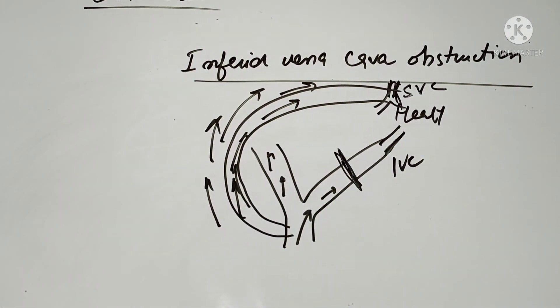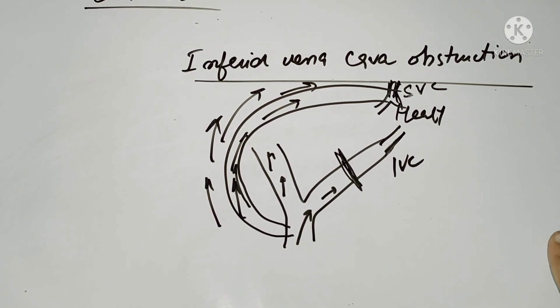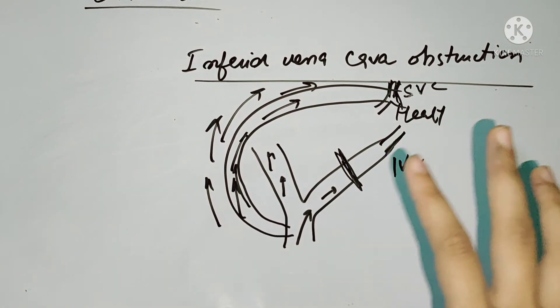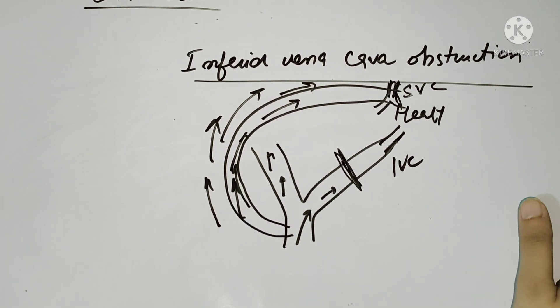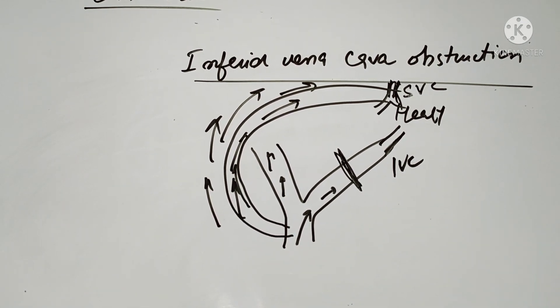This covers the anatomical importance of the umbilicus. Now we have to study the embryological importance, in which we will learn three terms: the vitello-intestinal duct, the urachus, and the umbilicus — and their clinical significance.